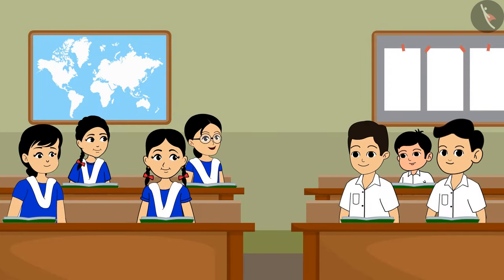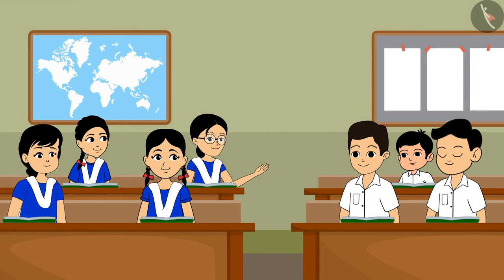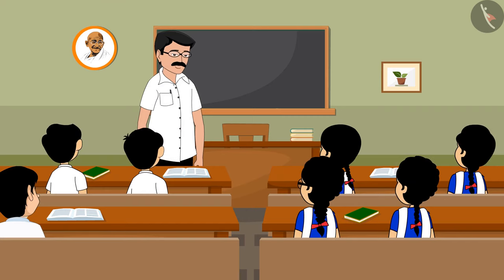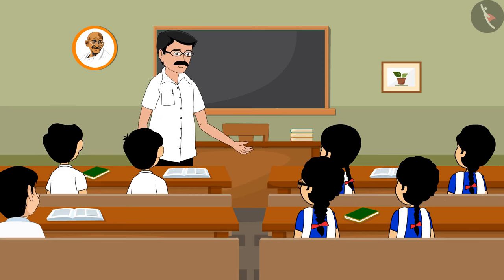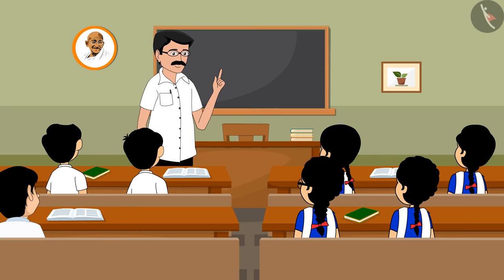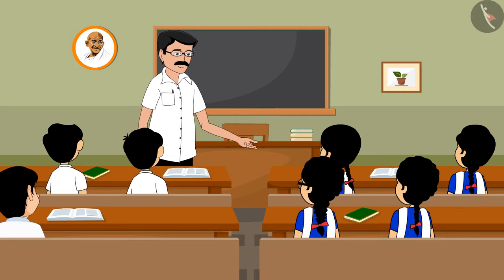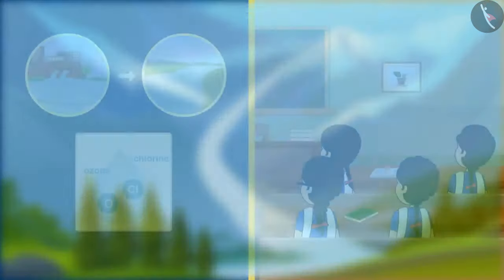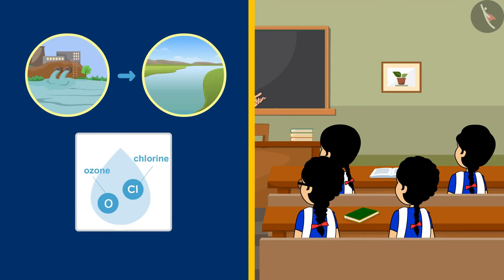Is the treated water also released into rivers and seas? Yes, the treated water is also released into rivers and seas. The treated water contains a small amount of organic matter and suspended substances, which are cleared by natural processes. Quite often, chlorine and ozone are added to the water to make it germ-free.